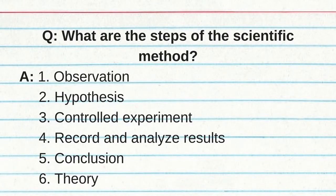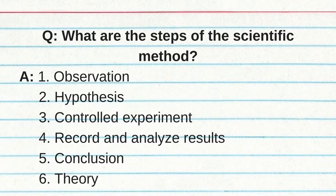What are the steps of the scientific method? One, observation, which helps you decide what to investigate. Two, hypothesis. Three, controlled experiment. Four, record and analyze results. Five, conclusion. And six, theory.